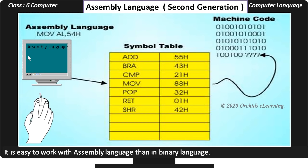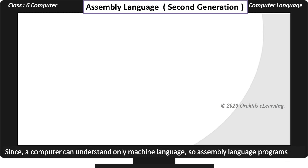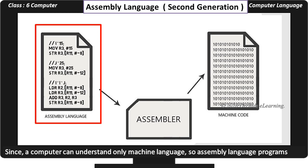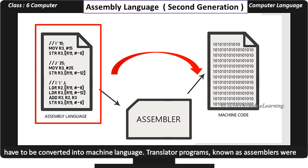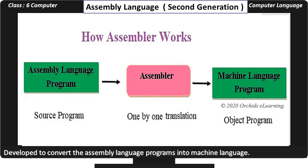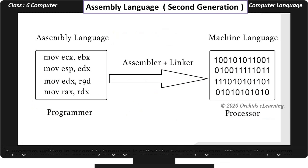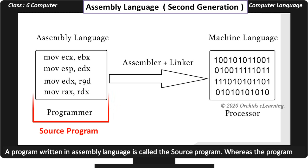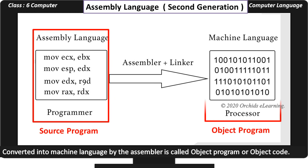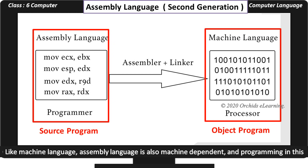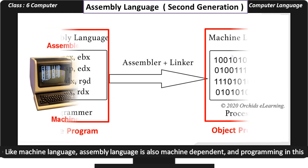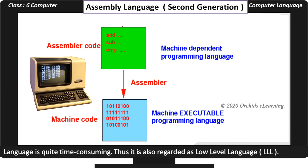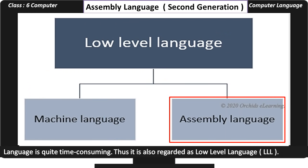Hence, it is easy to work with assembly language than with binary language. Since a computer can understand only machine language, assembly language programs have to be converted into machine language. Translator programs known as assemblers were developed to convert assembly language programs into machine language. A program written in assembly language is called the source program, whereas the program converted into machine language by the assembler is called the object program or object code. Like machine language, assembly language is also machine dependent, and programming in this language is quite time consuming. Thus it is also regarded as a low level language.